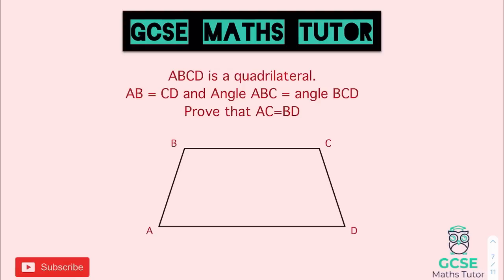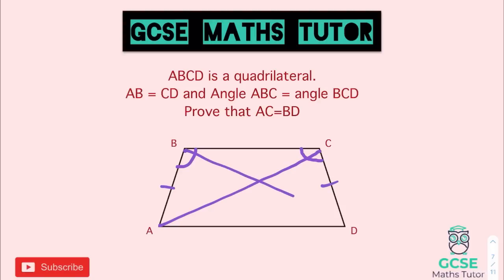Here's another question — a quadrilateral where the length AB equals CD, and angle ABC equals angle BCD. You want to prove that AC equals BD. For this one you have to draw the crossover lines in yourself, and we're going to prove those lines are equal by proving the triangles are congruent.